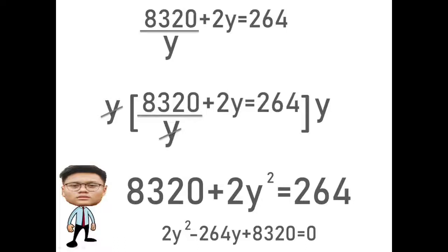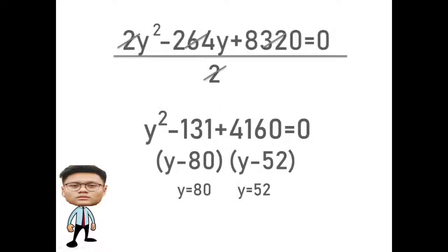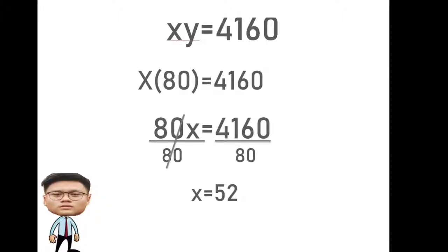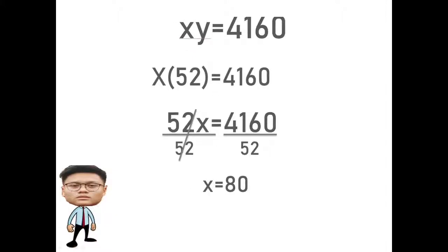As we can see we have quadratic equation here, so we will transpose 264y to the left side of the equation. So as we can see, the equation can still be simplified. Let's factor out the equation. It will become y equals 80 and another one is y equals 52. To get the x, we will replace the value of y in the first equation.